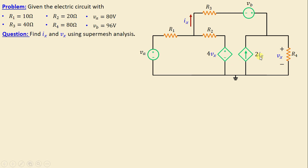The question is to find ix and vx. ix is the mesh current of interest, and vx is the voltage across resistor R4. We will solve this using super mesh analysis.